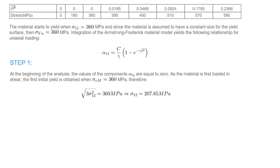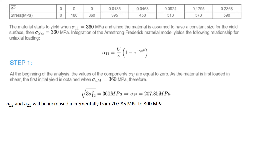The next step is to find the strains associated with the given loading steps. Under shear loading, the von Mises stress equation is given as the square root of 3 times sigma₁₂ squared equals the initial yield. This results in finding the value of sigma₁₂ that separates elastic from plastic behavior. The material will behave elastically until the shear stress reaches 207.85 MPa, beyond which sigma₁₂ and sigma₂₁ will increase incrementally up to the given value of 300 MPa.